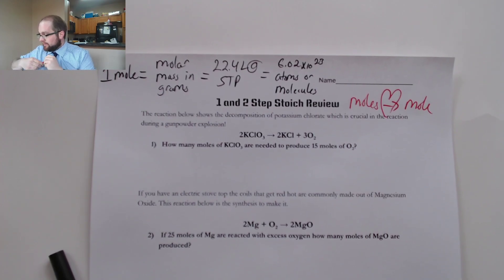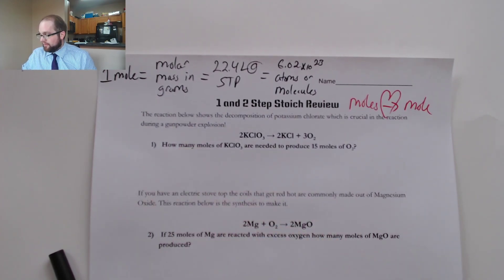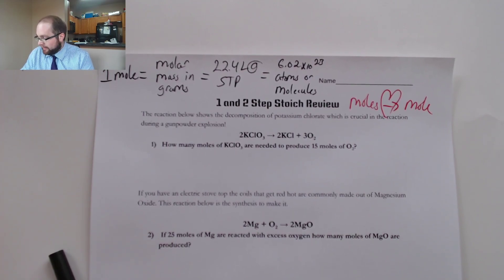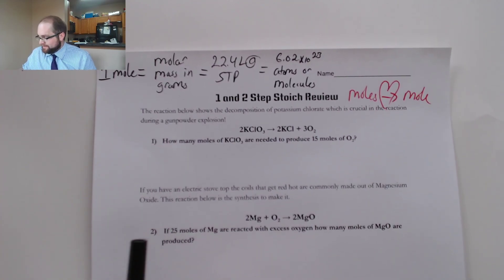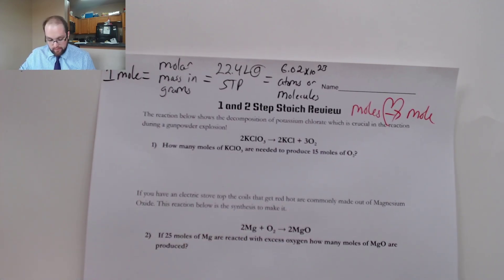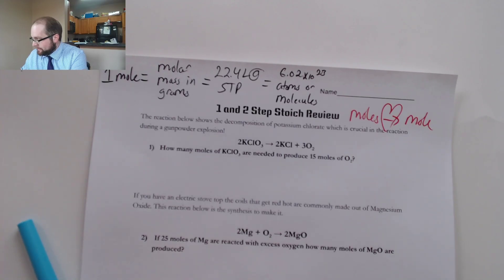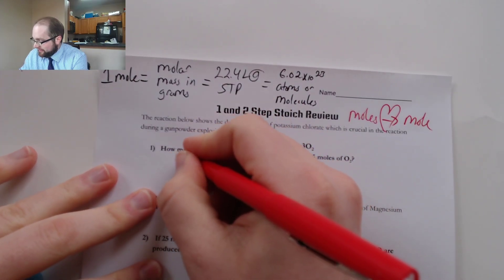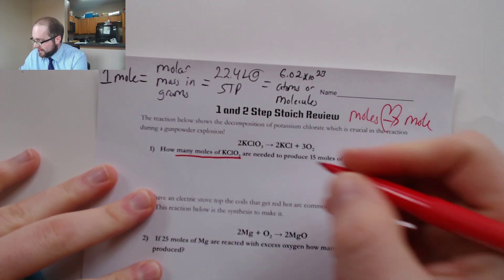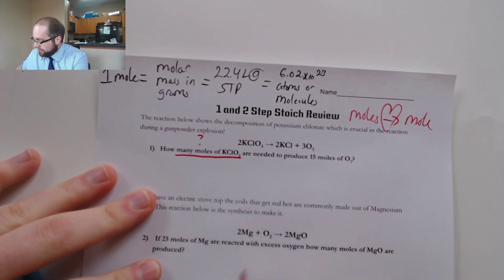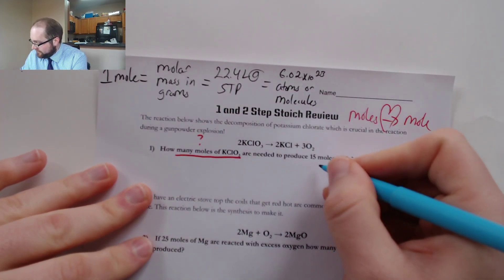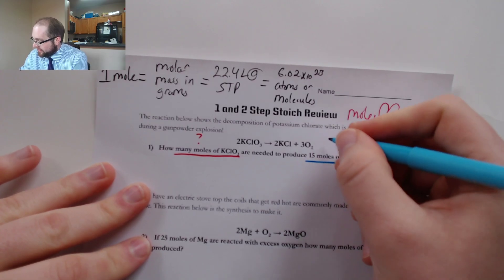So let's take a look at a problem like the first one here where it talks about the decomposition of potassium chlorate. This is a big part of the gunpowder reaction and we can see that in this problem we are starting with, it's asking us to find how many moles of potassium chlorate are produced when we have 15 moles of oxygen.